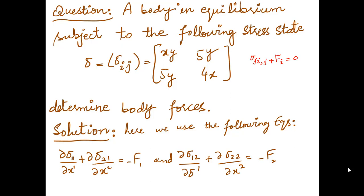Let's see. The first question is: a body in equilibrium is subject to the following stress state. This stress state is defined, meaning the stress tensor is defined. Sigma is equal to the sigma_ij matrix, which is equal to: [xy, 5y; 5y, 4x]. This stress matrix is defined in 2D.